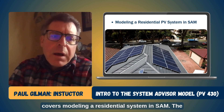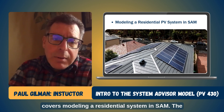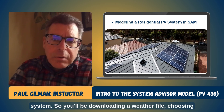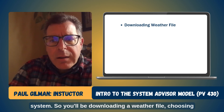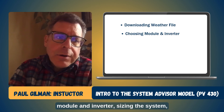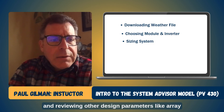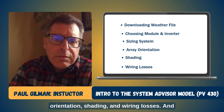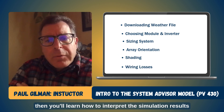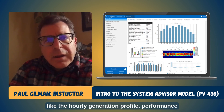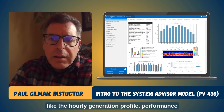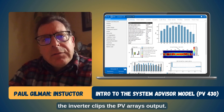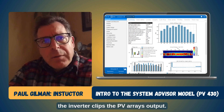PV430 covers modeling a residential system in SAM. The first session covers the model of the physical system. You'll be downloading a weather file, choosing module and inverter, sizing the system, and reviewing other design parameters like array orientation, shading, and wiring losses. You'll also learn how to interpret the simulation results like the hourly generation profile, performance factors, and how to investigate whether the inverter clips the PV array's output.